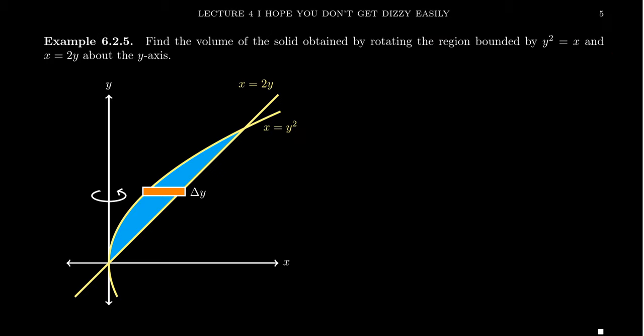And so let's illustrate this with an example here. Let's find the volume of the solid of revolution obtained by rotating this region that you see in front of you. It's bounded by y squared equals x and x equals 2y about the y-axis. And it's always to my recommendation that you draw these pictures out.